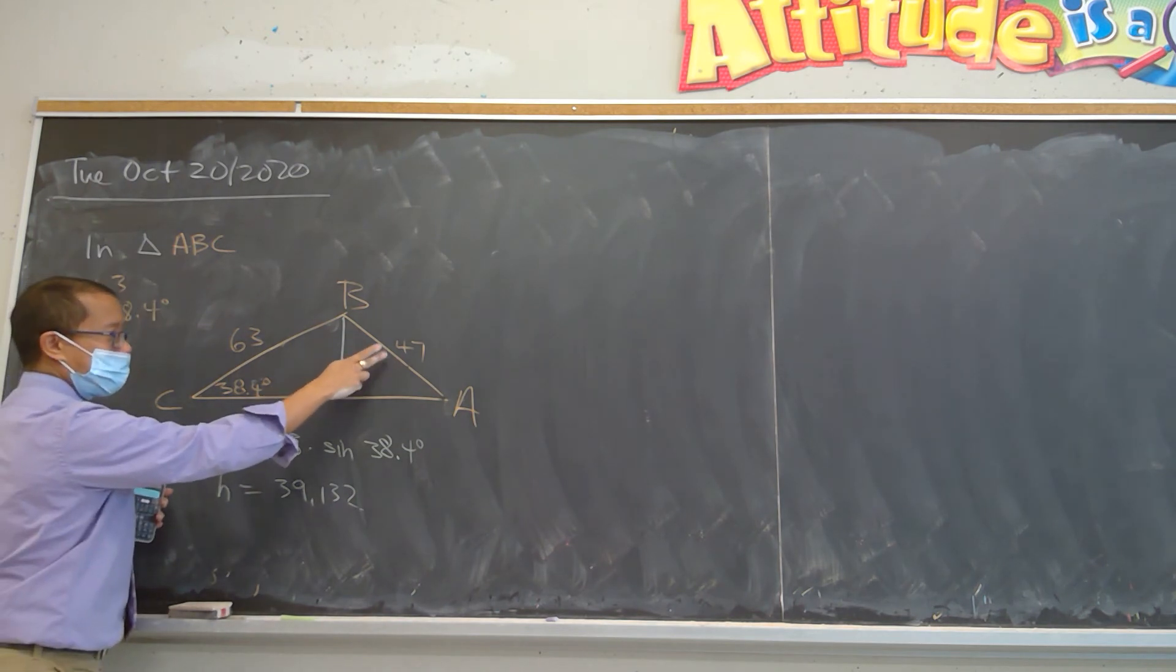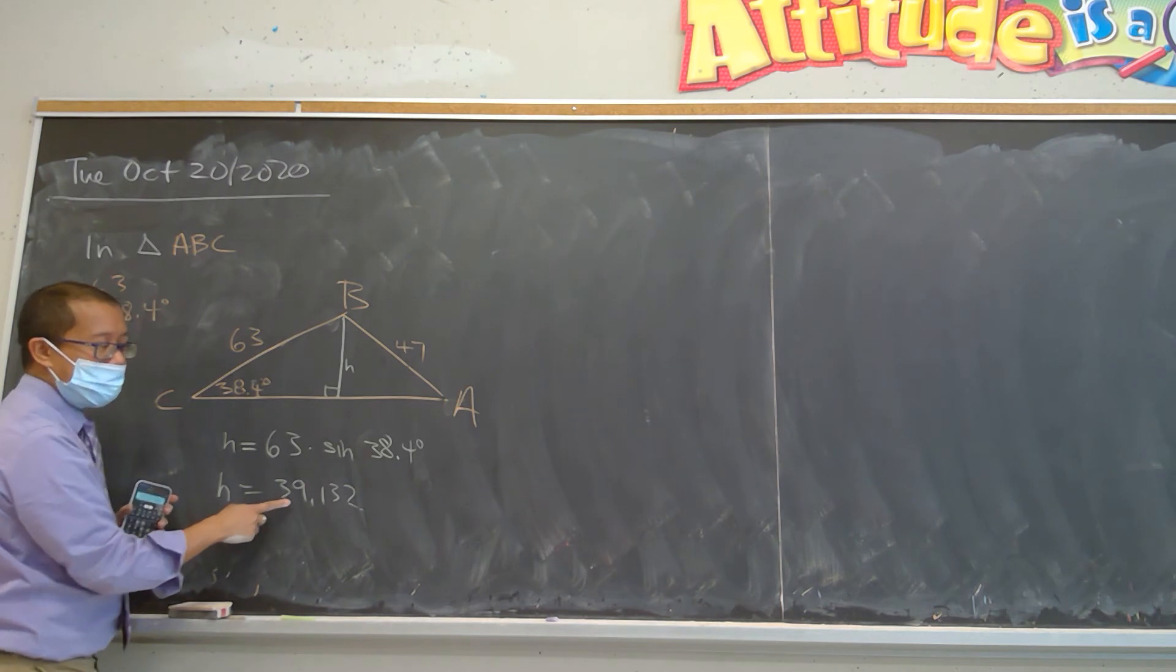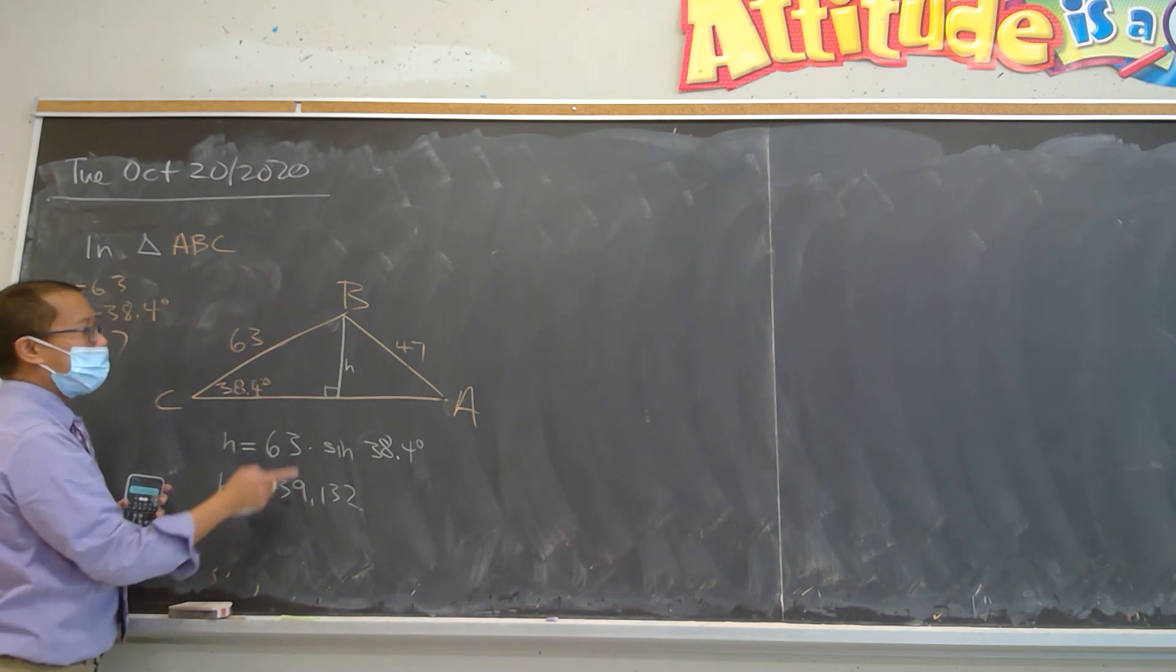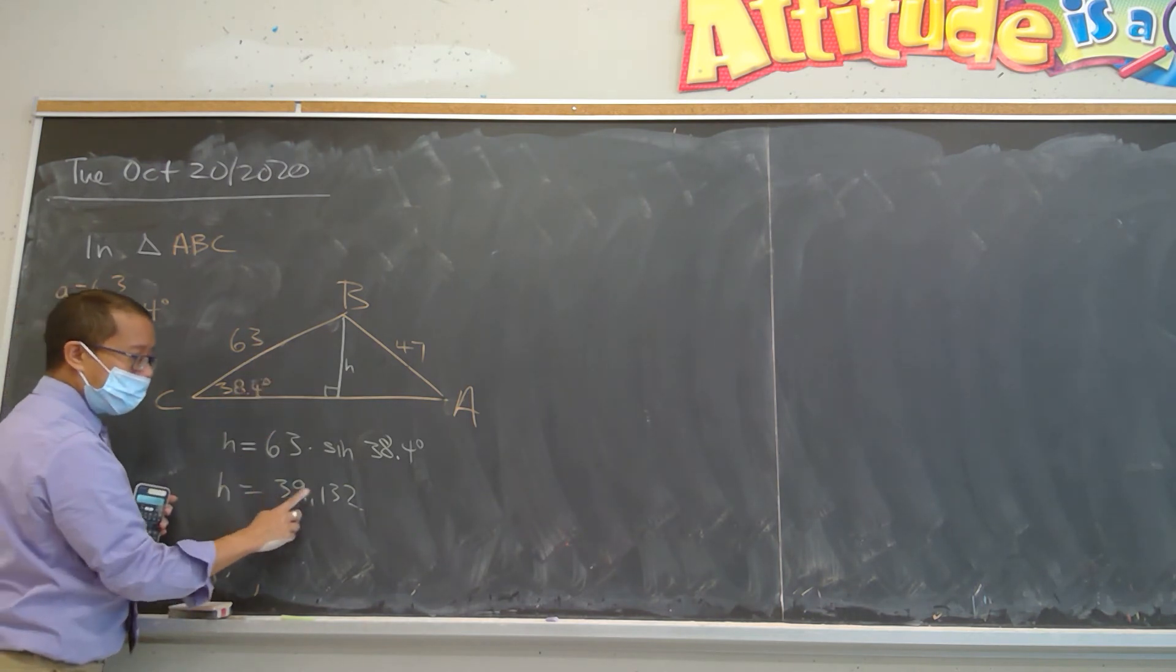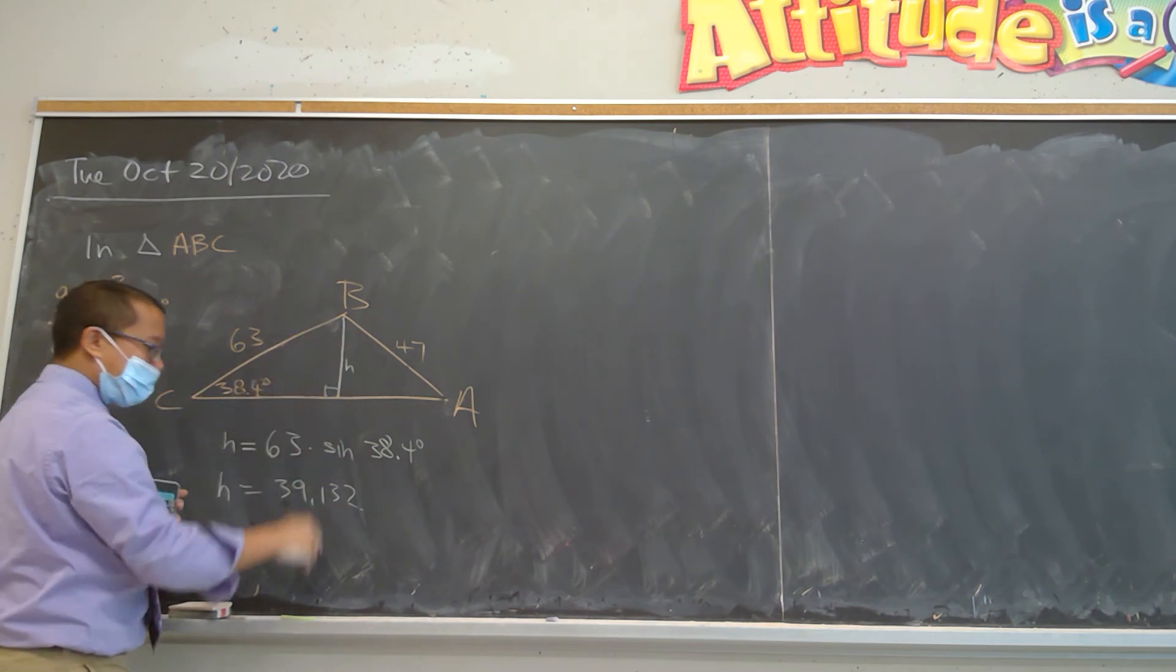One more time, if side C was less than this number, let's say it was 38 units even, then the triangle would not exist. Or even if side C was actually 39.132, then that would be the height. But in this scenario...